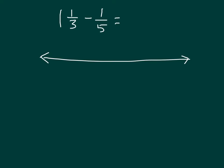1 and 1 third is definitely more than 1 and still less than 2. If we place it onto the number line, we would be right here at 1 and 1 third. When we are subtracting 1 fifth, we know that 1 fifth is actually smaller than 1 third, so we would draw back from the number line and not quite to 1. So we know our answer should be somewhere between 1 and 1 and 1 third.